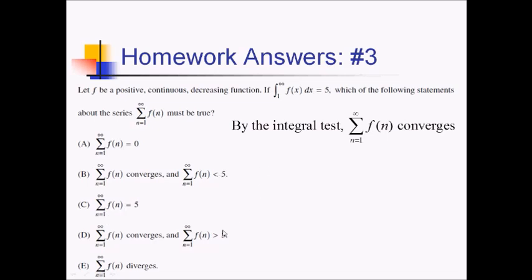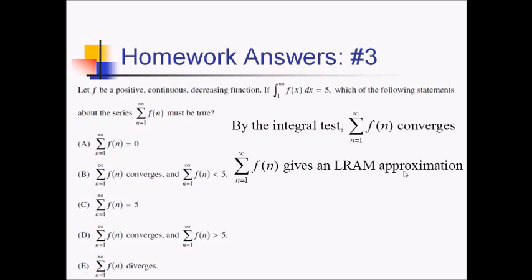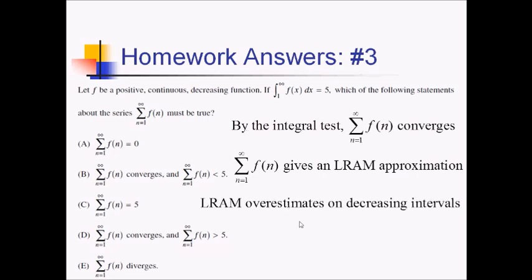That leaves us with B and D — basically asking whether our series underestimates or overestimates the true value of the integral. A series is really just a RAM approximation of the original function. Since we're starting at 1 for the first number we plug into our series, and 1 is where our integral begins, we're starting on the left endpoints of our rectangles — so this is an L-RAM approximation. Now if this had started at 2 instead of 1, we would have had R-RAM. Since this is a decreasing function, L-RAM is going to over-approximate on decreasing intervals, meaning this summation has to actually be greater than 5. So that matches answer choice D — it converges, but it's greater than five.